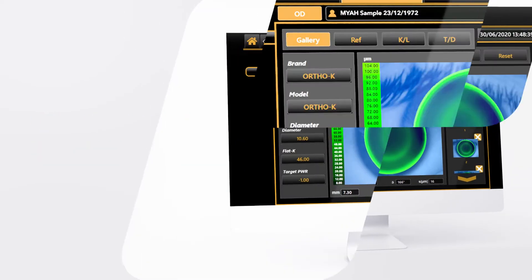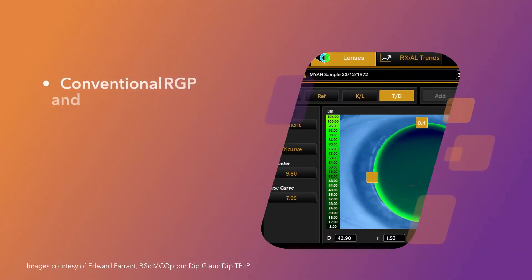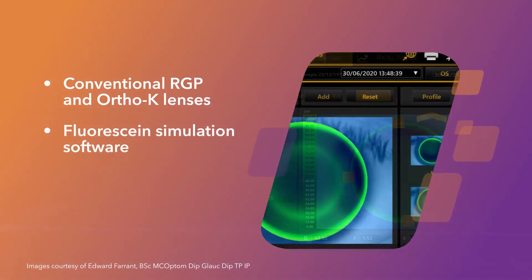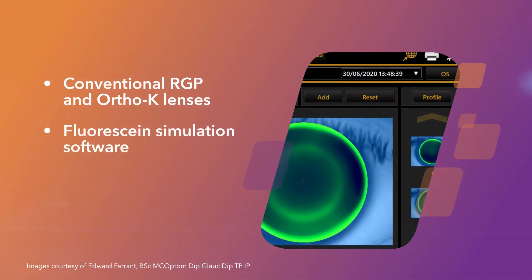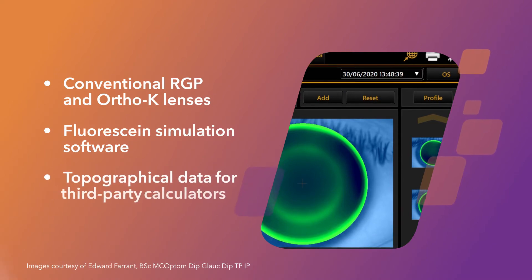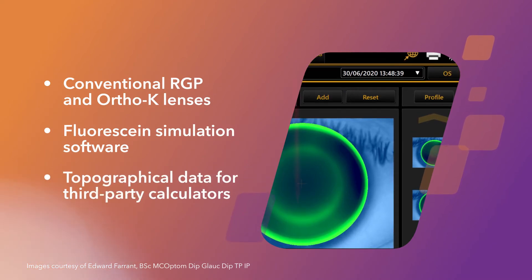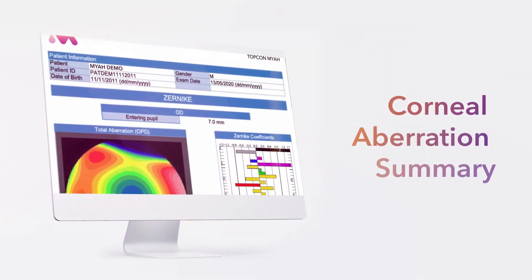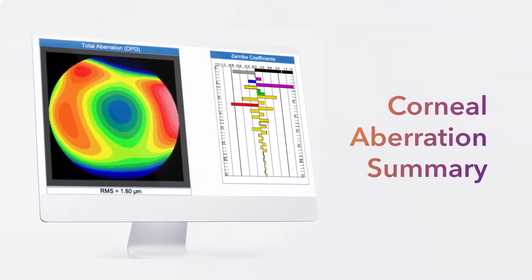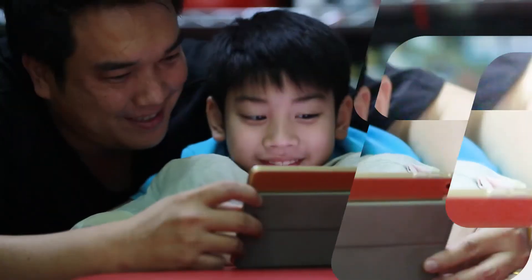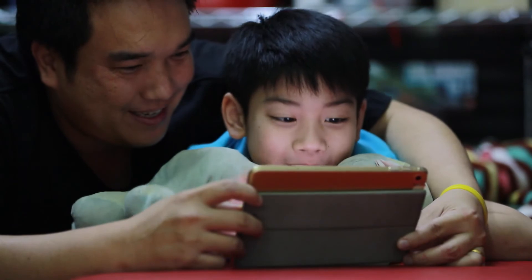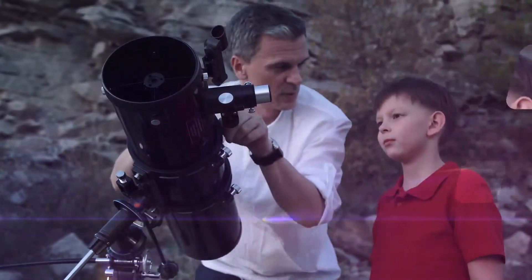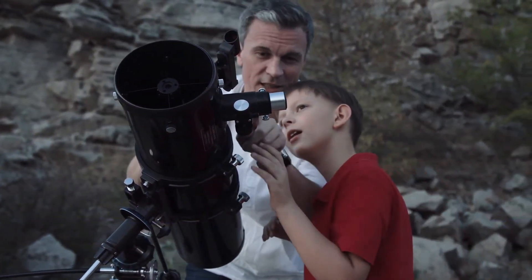Maya features a database of conventional RGP and Ortho-K lenses, as well as fluorescein simulation software. Export topographical data to third-party calculators to streamline lens selection. Map higher order aberrations of the eye over different pupil sizes and simulate the effect of aberrations on the patient's visual quality to enhance optical recommendations and contact lens parameters.